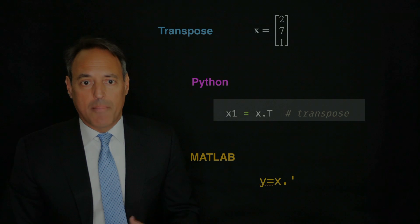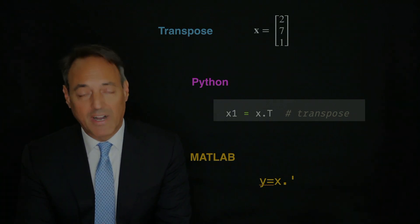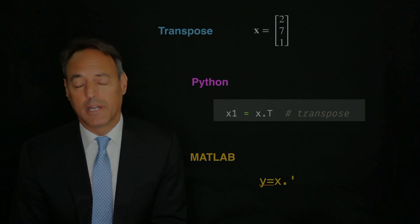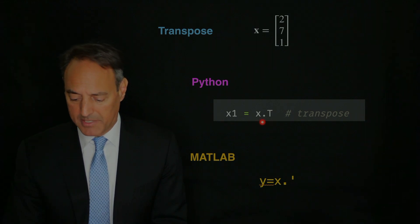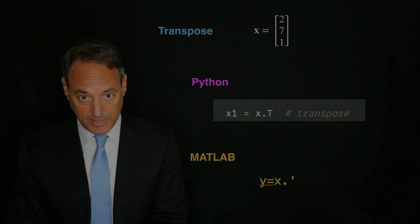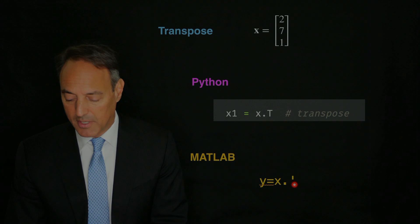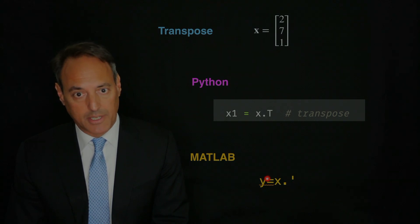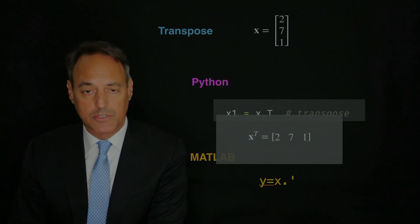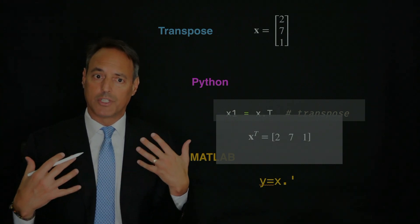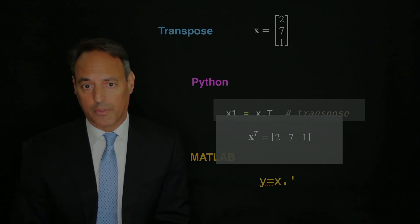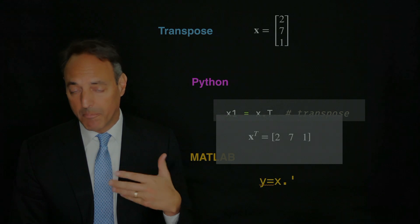A couple of last comments. There's the concept of what's called a transpose. If I take a column vector — here it is, 2, 7, 1 — I can turn it into a row vector. Python does this by saying x.T, where T means transpose. In MATLAB it's the dot-apostrophe: x.' It lays the vector on its side. You can also transpose matrices, so rows become columns and vice versa. This operation we will use repeatedly throughout the course.